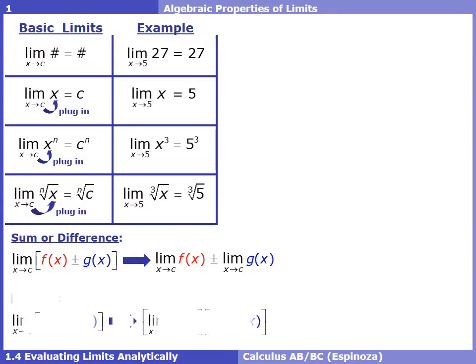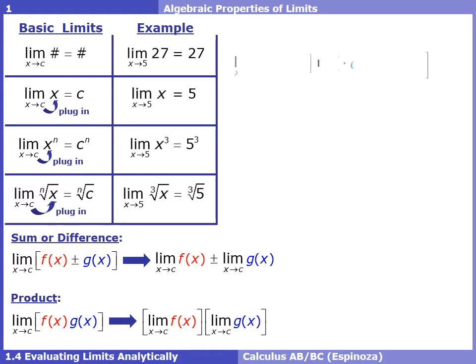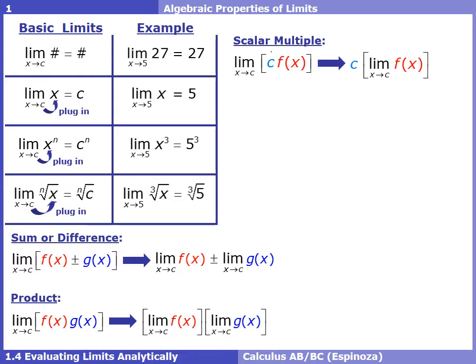In the product property, when we're multiplying two functions and taking the limit, we can take the limit of f separately, take the limit of g separately, and then multiply those results. Again, we're not distributing the limit — we're applying an algebraic property. Similarly, if we have a constant c times a function, we can factor that constant out to the front of the limit.